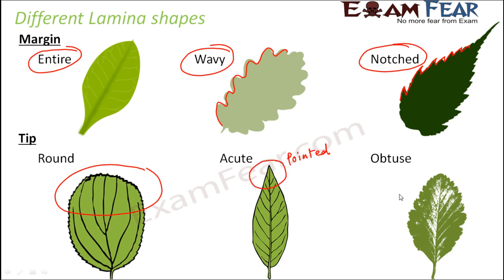Obtuse is something intermediate — neither completely round nor very pointed. So the three types are round, acute, and obtuse. These are the three different varieties of tip of the lamina.